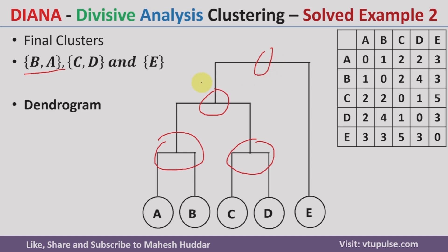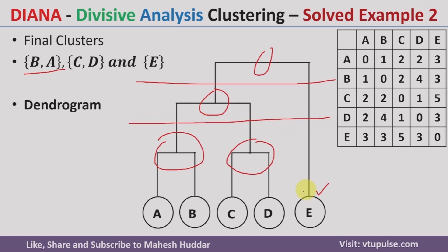If you are interested in only two clusters, we can divide the dendrogram here, giving one cluster as E and another as A, B, C, D. If you are interested in three clusters, we divide here to get AB as one cluster, CD as the second cluster, and E as the third cluster. If you are interested in five clusters, you divide here to get A, B, C, D, and E as five individual clusters. This is how we apply the divisive analysis clustering algorithm to a given dataset and divide the data into different clusters.